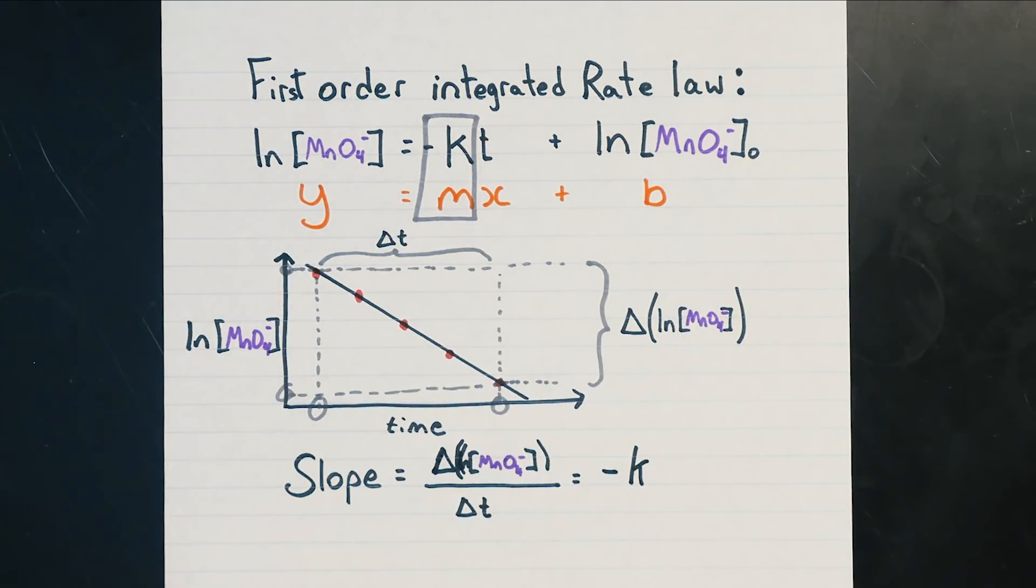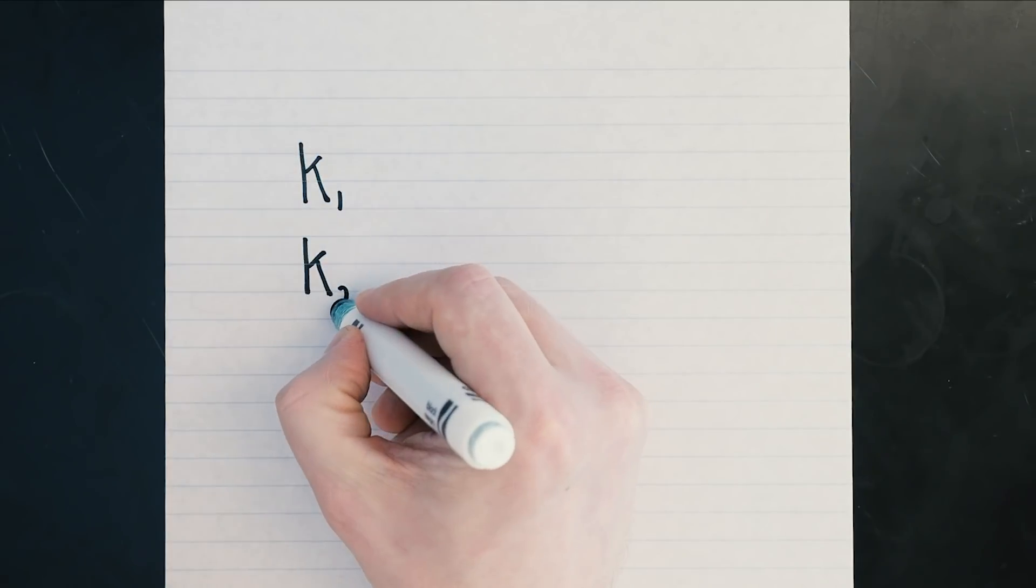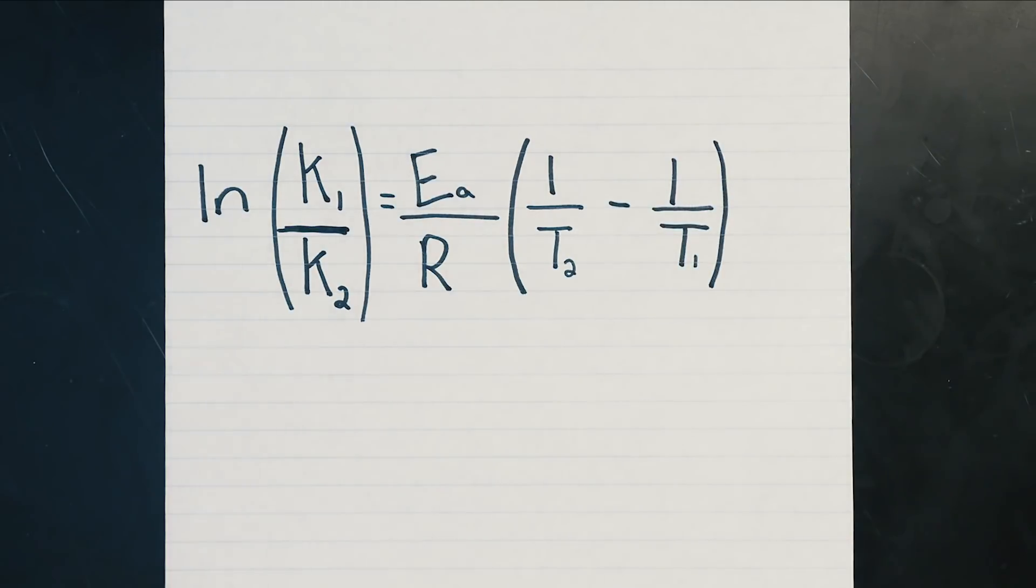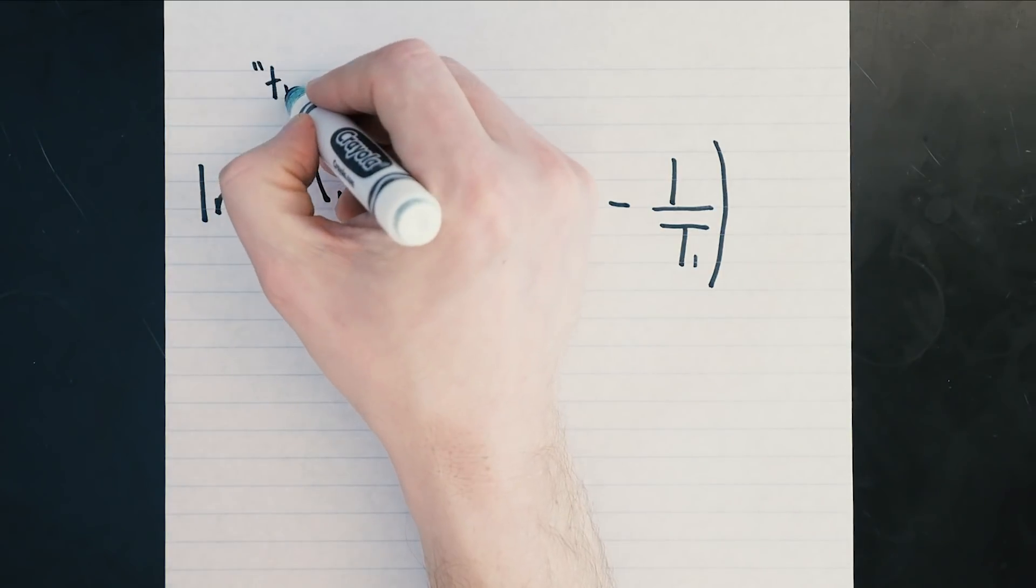Repeating this procedure for run number 2 will give you the second value for the rate constant k that you need to calculate the activation energy using the two-point Arrhenius equation.